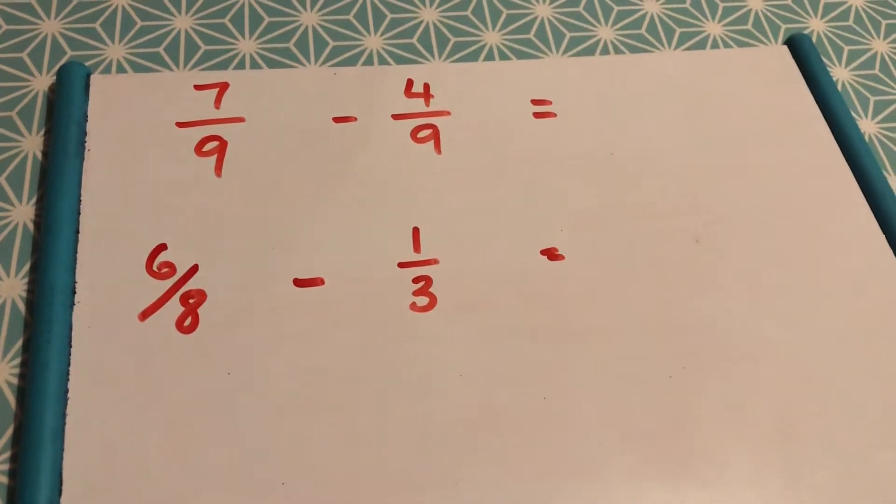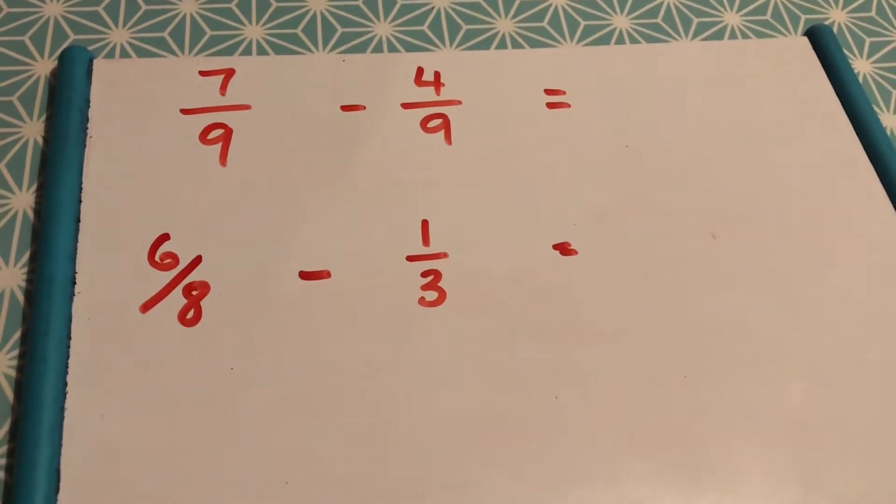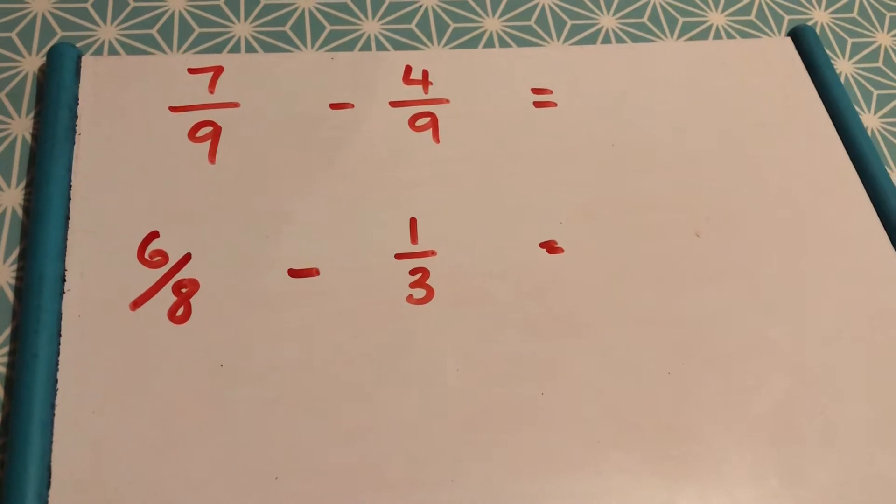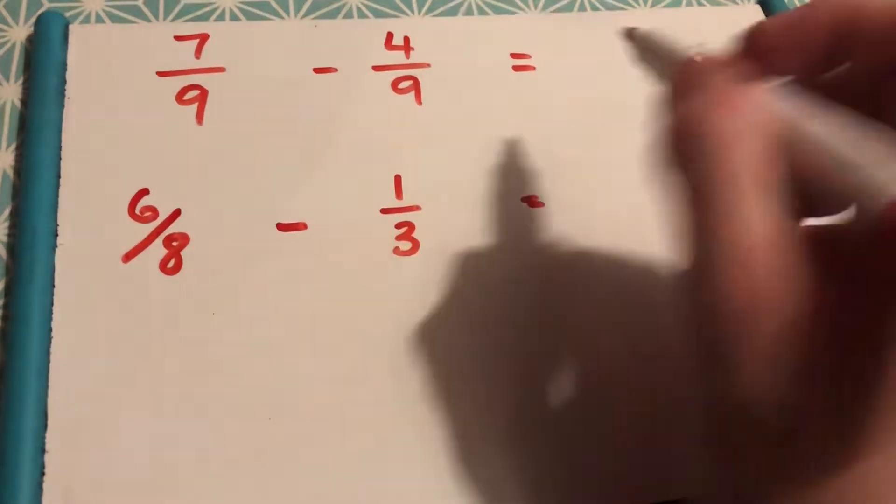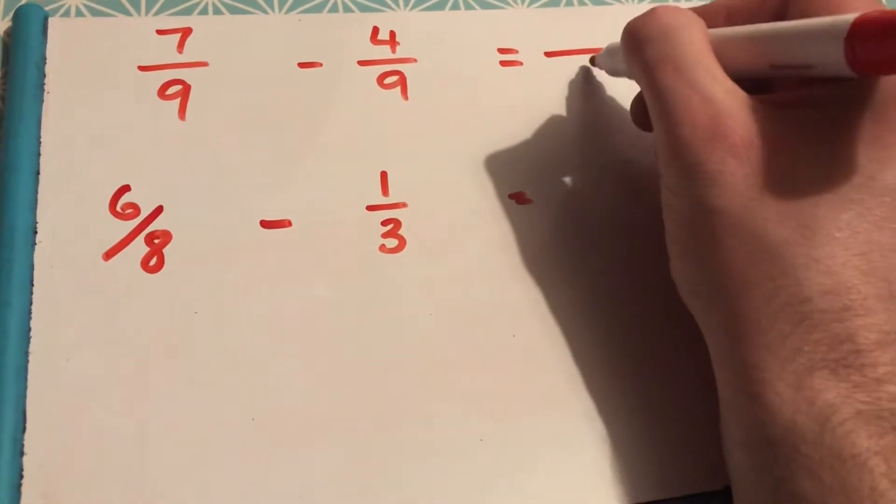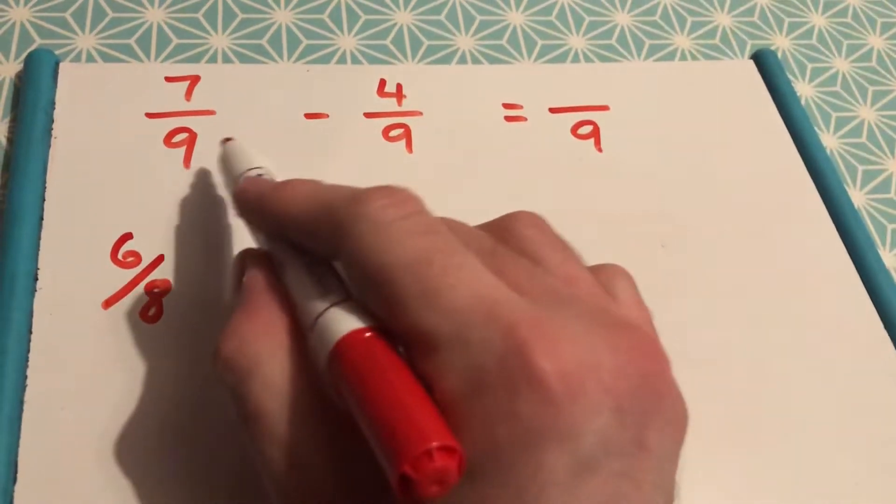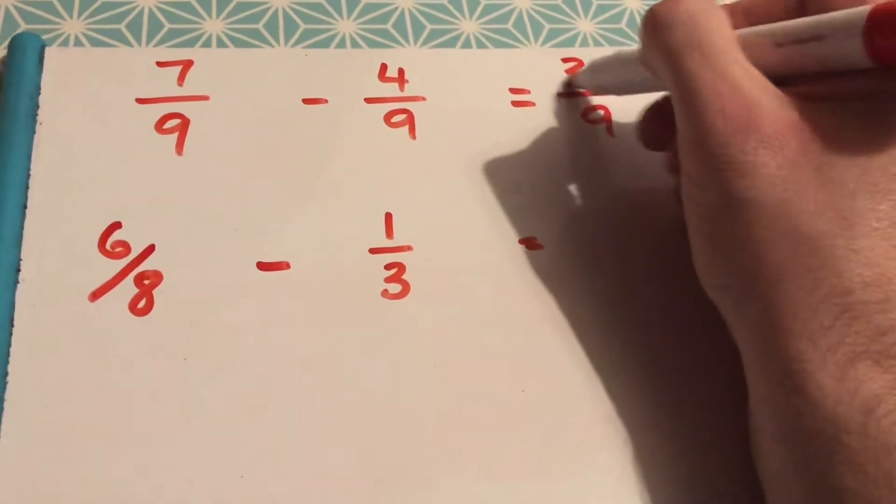Quick video to show you how to subtract fractions this time. You just have to do exactly the same as adding, but you just subtract. So, denominators are the same, so we keep it the same. 7 subtract 4 gives you 3.